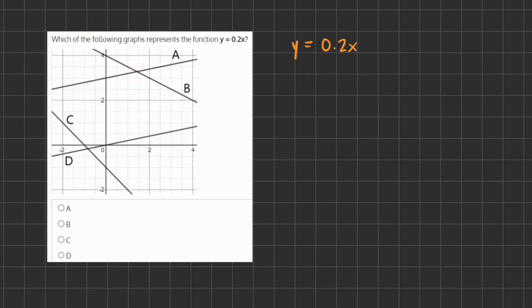Alright, so in this problem we are given a function y equals 0.2x and we want to find out of all the lines on the given graph which one represents the function.